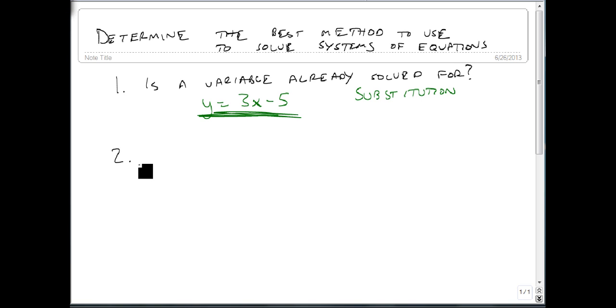Second, if a variable isn't already solved for, then is a variable easy to solve for? If it is, then for instance, suppose I have x minus 3y equals 2. Notice it's really easy to solve for x here—we just have to add 3y over. Then we could use substitution.